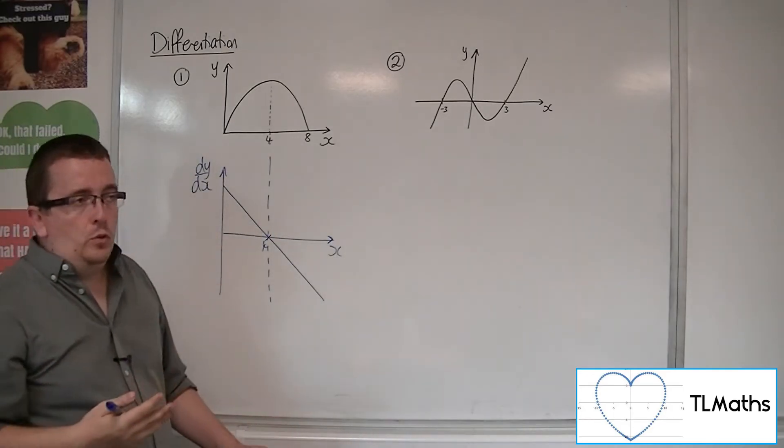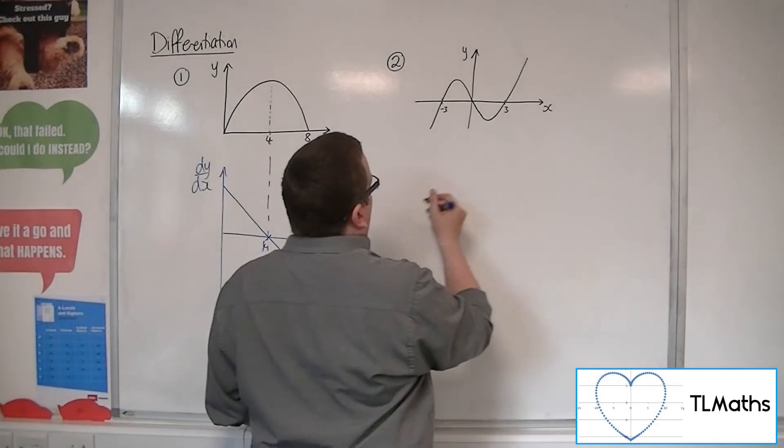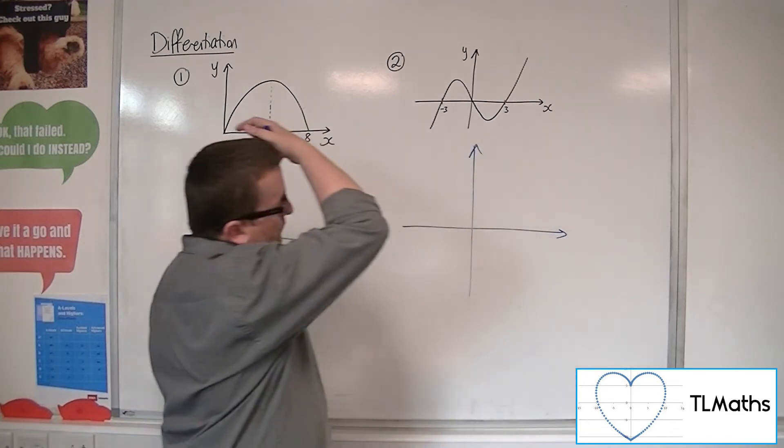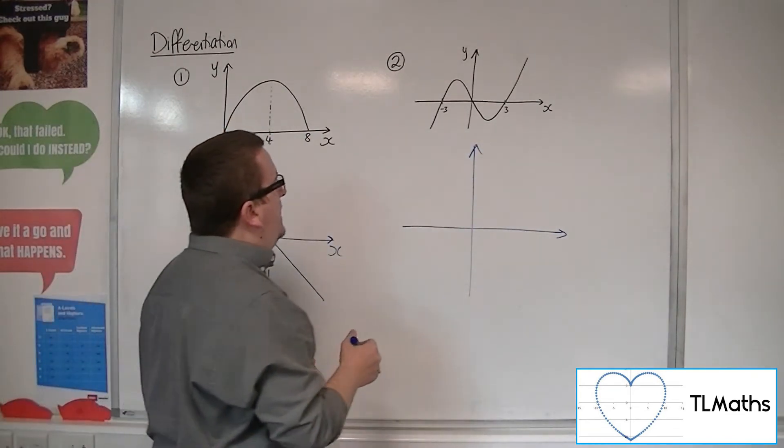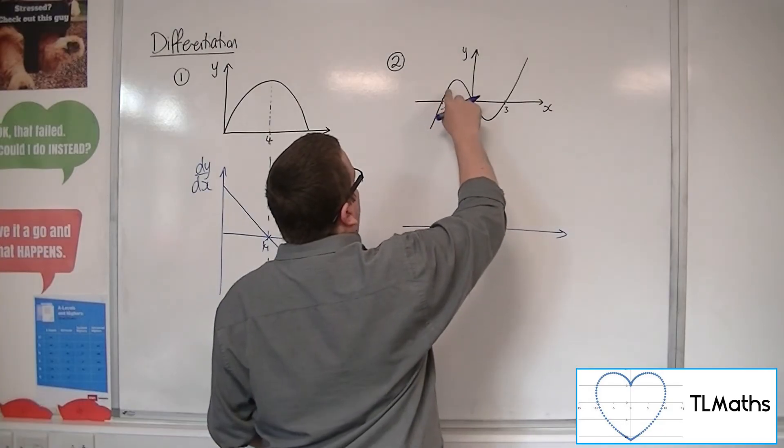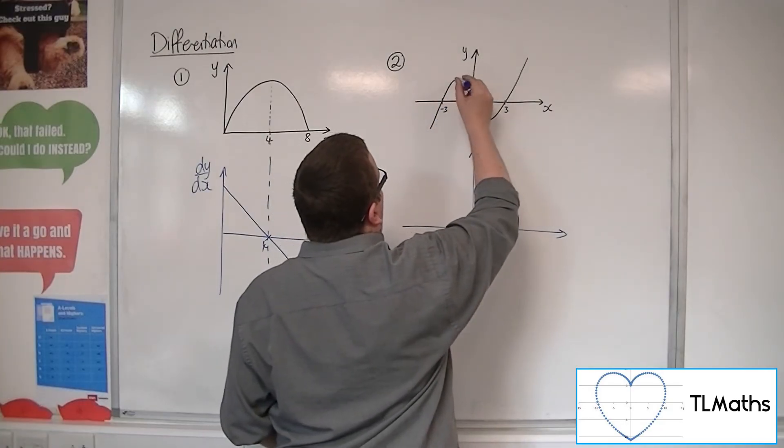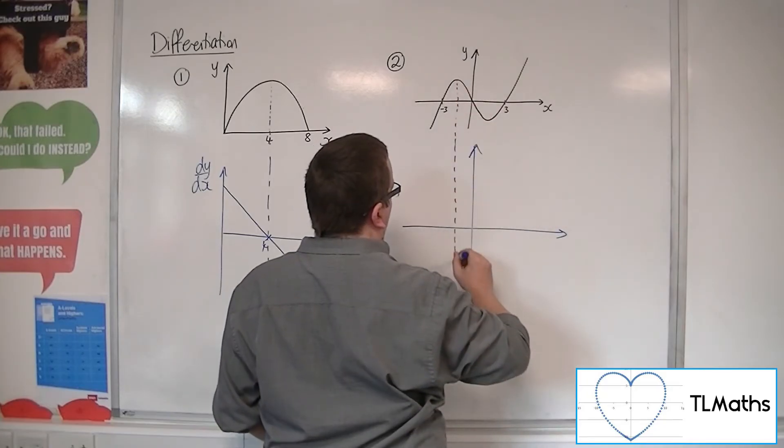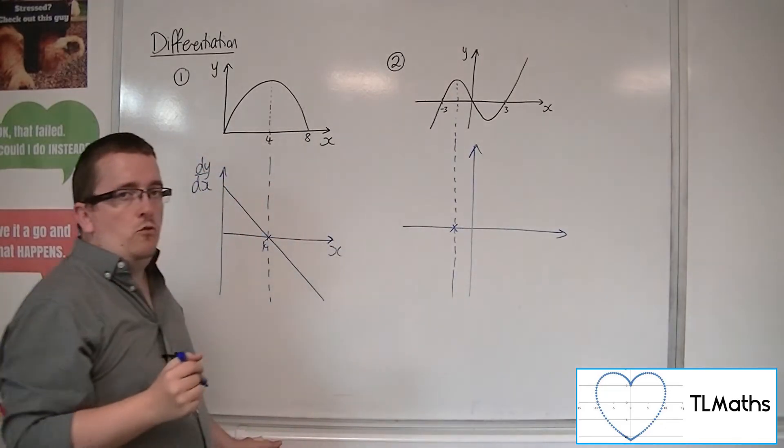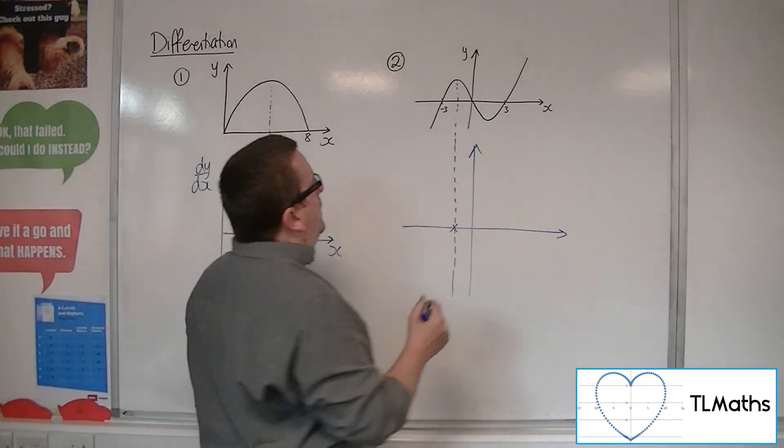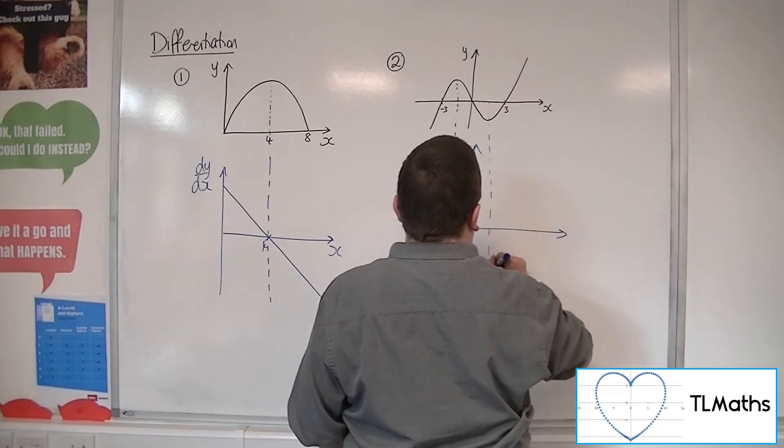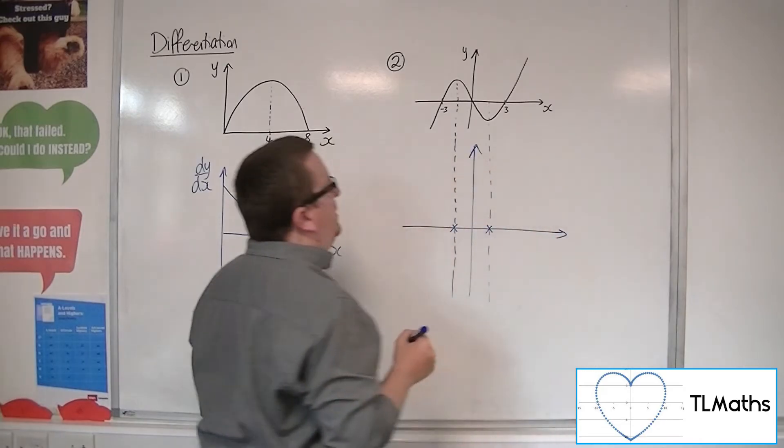Now, as for number 2, we can see that we are positive, and then at this point, the gradient will be 0. Then we can become negative, and then we get to this point, and we're going to be 0 again.